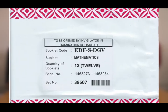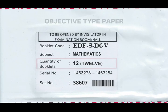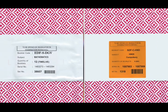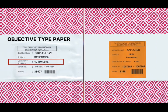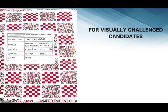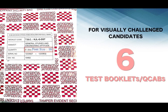Note that each packet for objective type paper contains 12 booklets, each packet for conventional type paper contains 6 booklets, and each packet designed for visually challenged candidates contains 6 booklets or question-come-answer booklets.